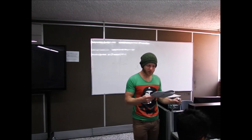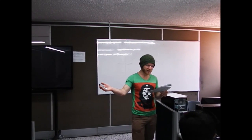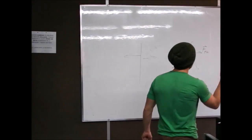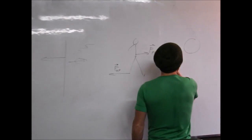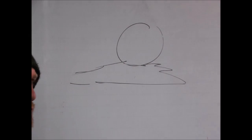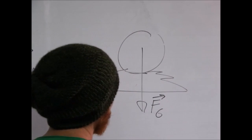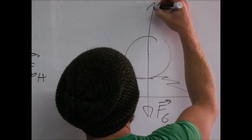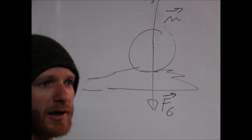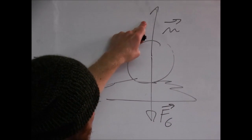Segunda pregunta: una persona sostiene una pelota en la mano. Identificar todas las fuerzas externas que actúan sobre la pelota y la reacción de cada una. ¿Qué fuerzas actúan sobre la pelota? La gravedad, Fg, y la normal, hacia arriba. Las dos son opuestas porque, por lo que hemos visto del equilibrio, la pelota está en equilibrio, entonces la fuerza de gravedad es opuesta a la normal.